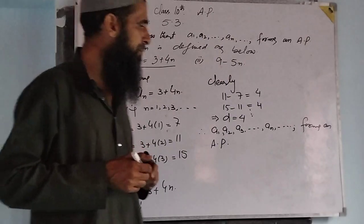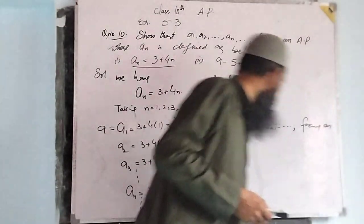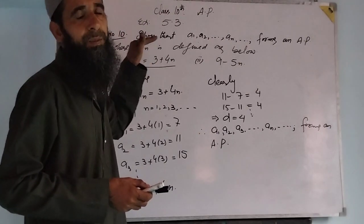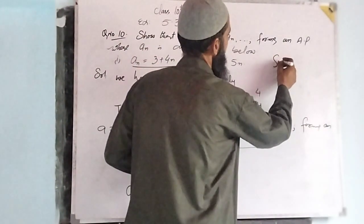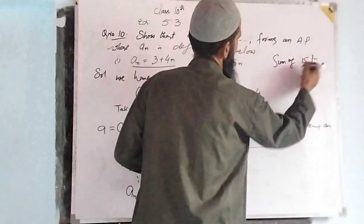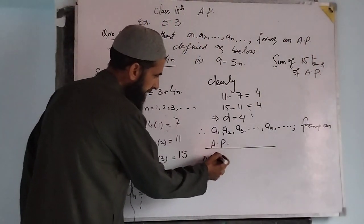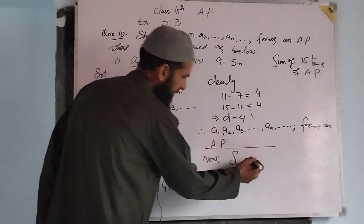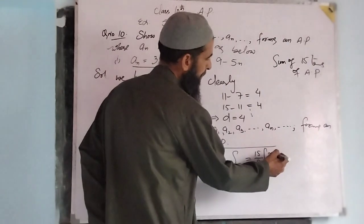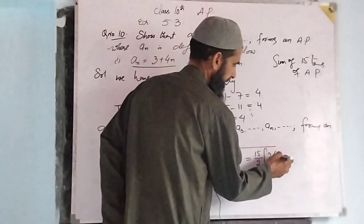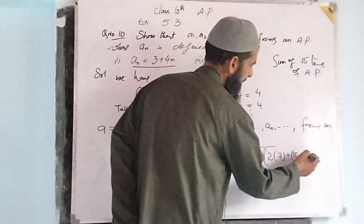Now the second part of this question: we have to find the sum of 15 terms. If this Arithmetic Progression is confirmed, then find the sum of 15 terms. We have to find S15, which is equal to, by the general formula, 15 by 2 into 2a, where a is 7, plus n minus 1 into d, that is 15 minus 1 into 4, where d is 4.